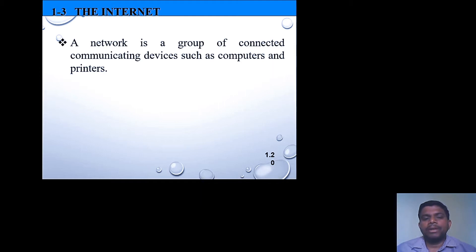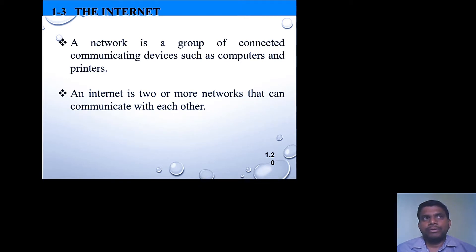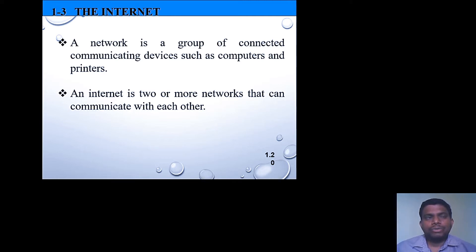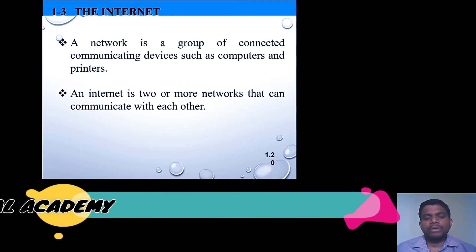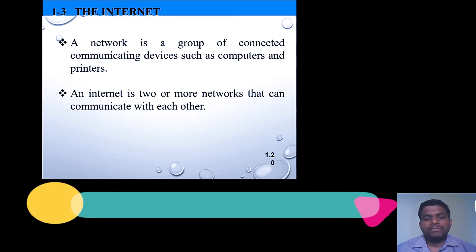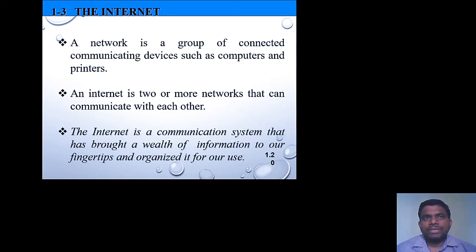Similarly, the internet is a group of two or more networks. While a network is a group of two or more devices, the internet is a group of two or more networks connected together for transferring data from one network user to another. The internet is also a communication system that transfers information from one node to another, spanning several organizations.